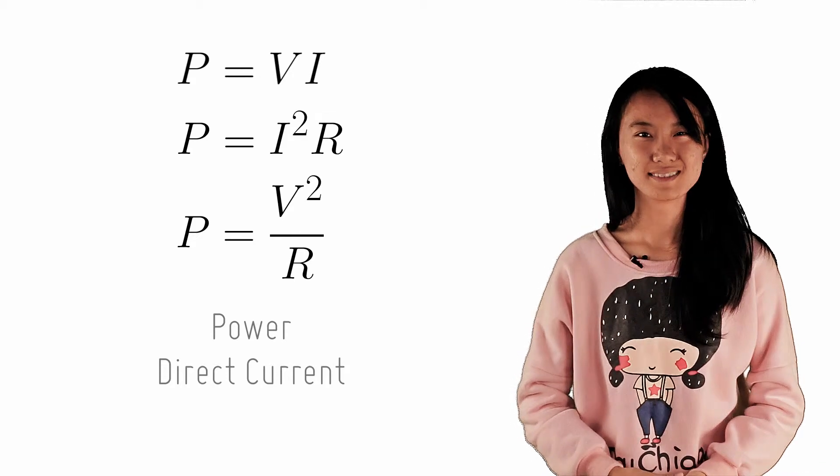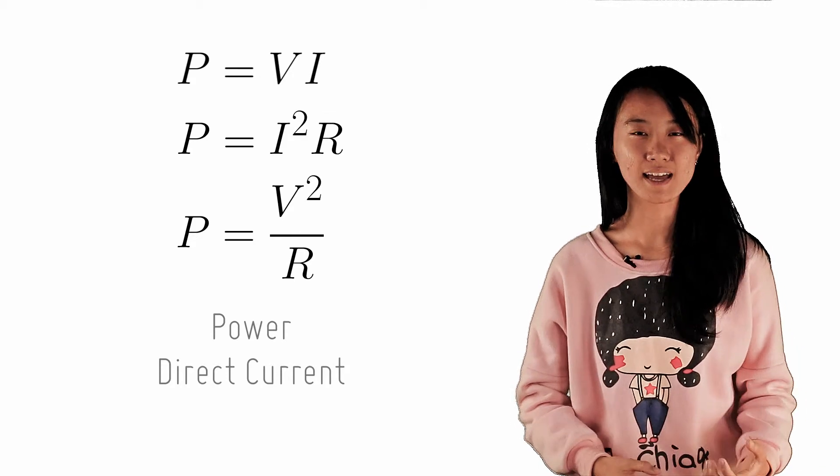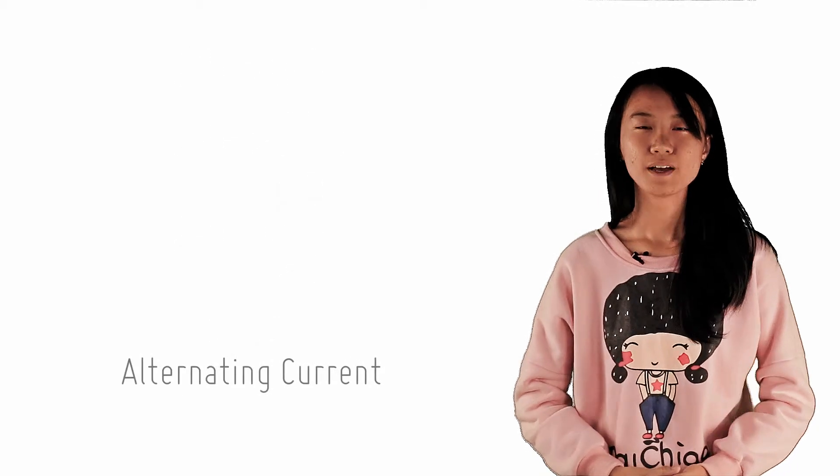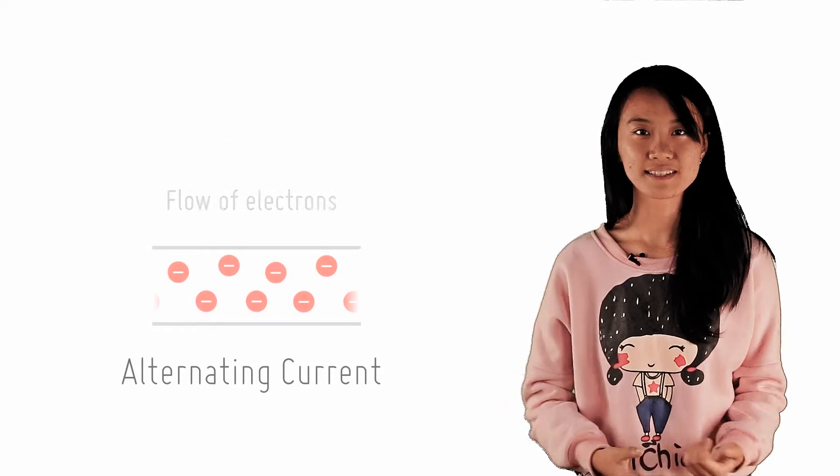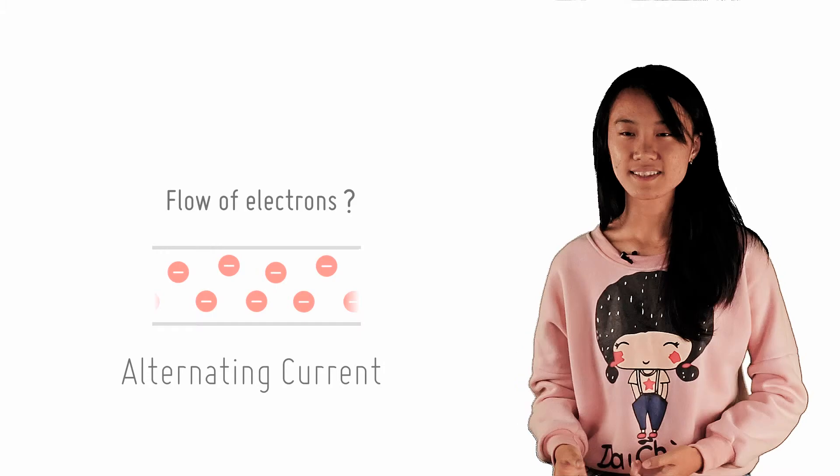Now that we have recalled a direct current, let us look at another form of current, an alternating current. What is an alternating current and what is the current flow like? Find out in the next chapter.